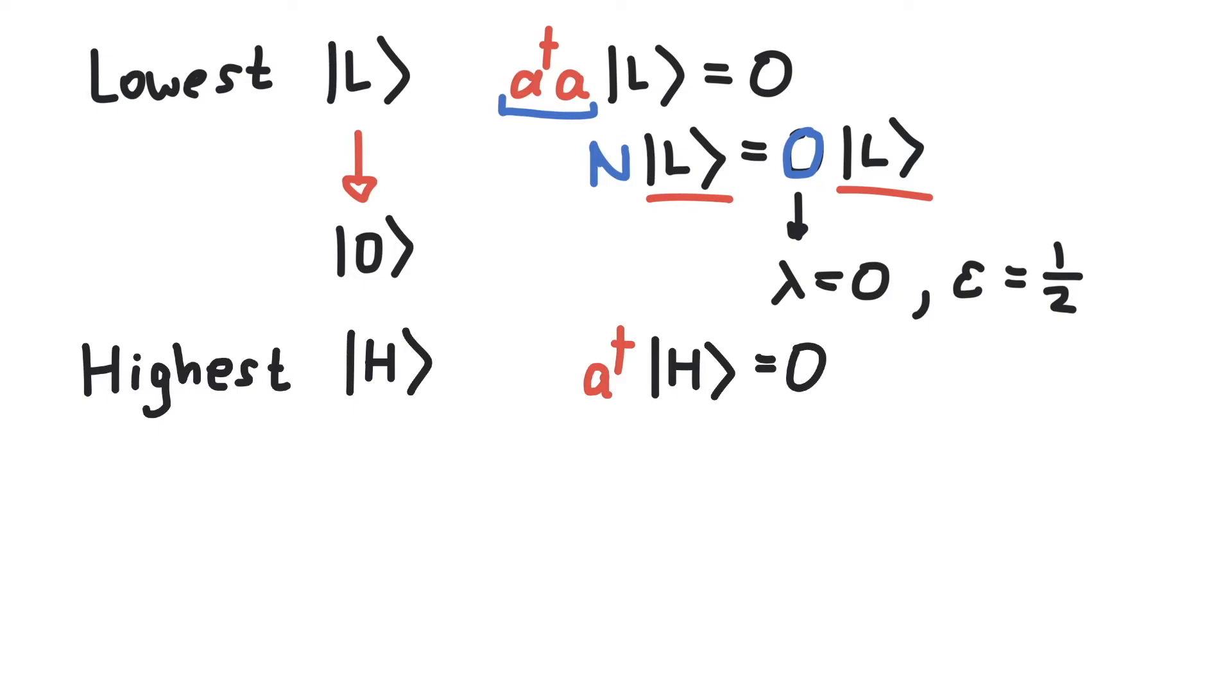To get some more information, we do a similar trick. We multiply this from the left with a, which leaves zero on the right. Now, we can't replace a, a dagger with a number operator, but what we can do is switch their places. So we can write this as a dagger a, acting on our highest state H, and then we have to add their commutator. Well, the commutator of a, a dagger is plus one. So plus one times our highest state, and this has to be equal to zero.